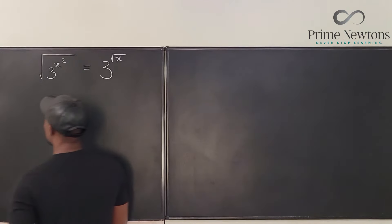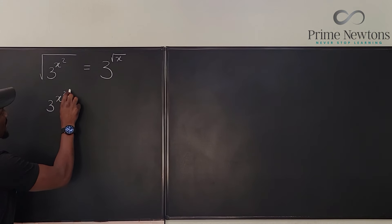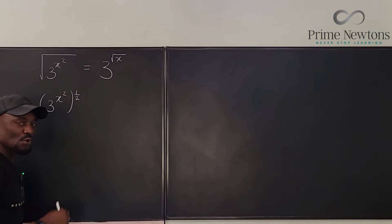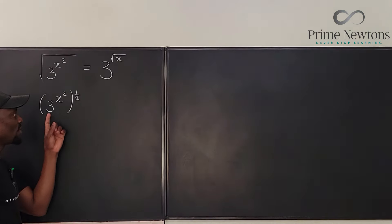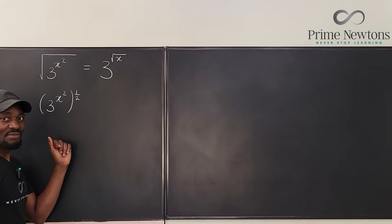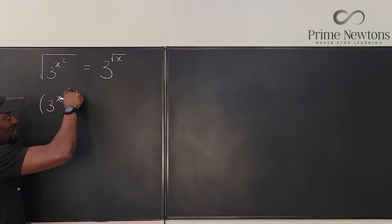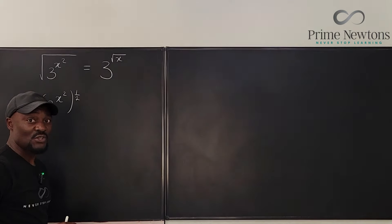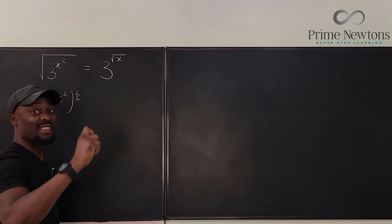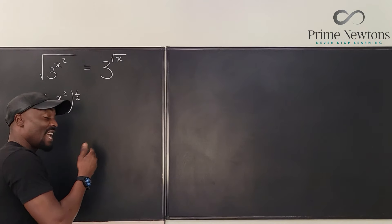Suppose we say this is the same thing as 3 to the x² raised to power one-half. To whom does the one-half belong — to 3, to x, or to 2? You have to know your laws of exponents. Whenever you have a tower of powers like this, you always put the top ones together first — you cannot separate them.